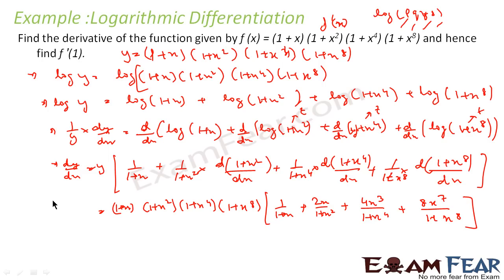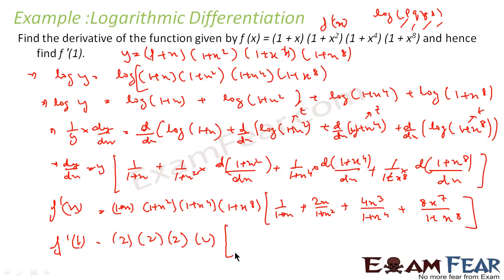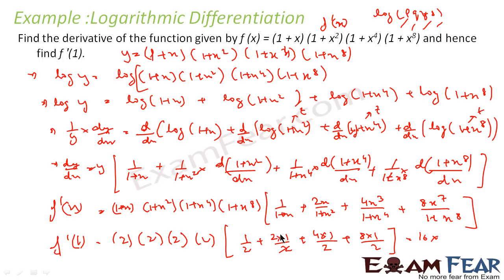This is the value of f'(x), and I have to find f'(1). Just put x = 1: the product becomes (1+1)(1+1)(1+1)(1+1) = 2·2·2·2 = 16. The bracket becomes 1/2 + 2/2 + 4/2 + 8/2 = 1/2 + 1 + 2 + 4 = 15/2. So f'(1) = 16 × 15/2 = 120. That is my answer.